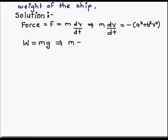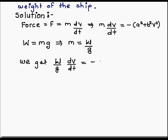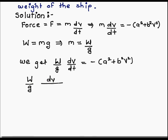We know that weight is equal to mass into gravity. Therefore, mass is equal to weight upon gravity. Substituting this value into the above equation, we get weight upon gravity into dv upon dt is equal to minus bracket a square plus b square v square.